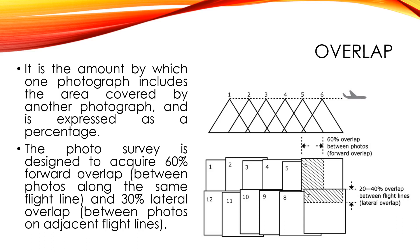Usually in an aerial photo survey, forward overlapping is 60% and lateral overlap is 30%. If you have a flight line, the photos on adjacent flight lines have lateral or side overlap. That is usually 30% lateral and 60% forward overlap.